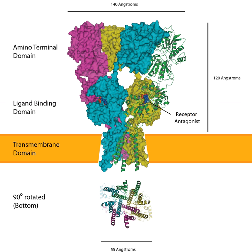AMPARs are found in many parts of the brain and are the most commonly found receptor in the nervous system. The AMPA receptor GluA-2 tetramer was the first glutamate receptor ion channel to be crystallized.